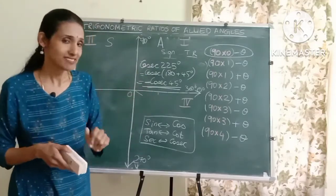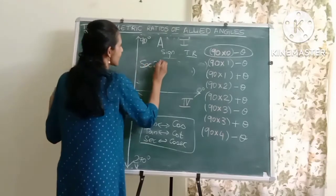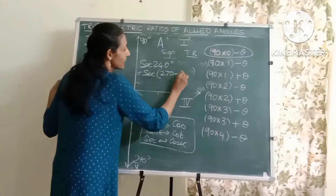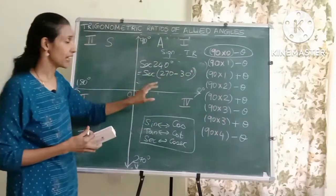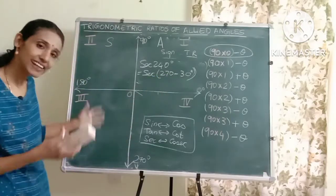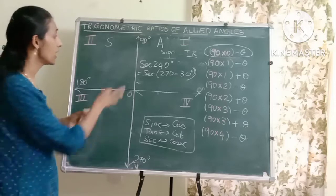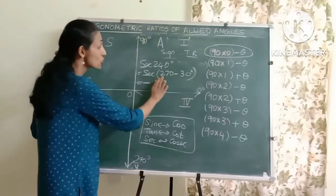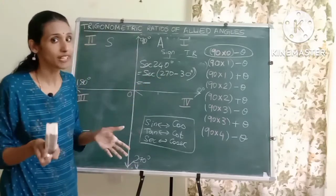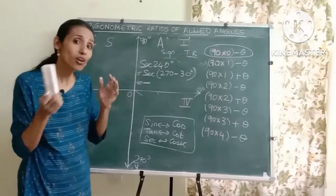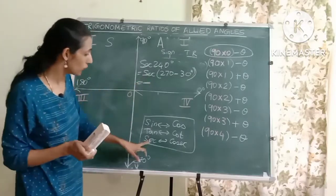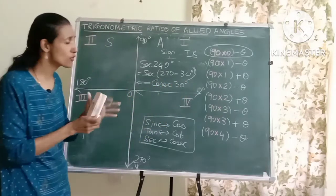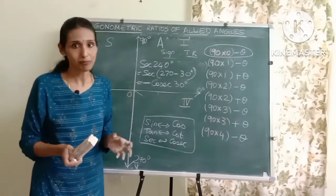For 270 minus theta, let's take sec of 240 degrees — I can write it as 270 minus 30 degrees. This lies in the third quadrant where tan and cot are positive, but I have sec, so it will be a negative value. Since 270 lies on the y-axis, the y-axis always changes the trigonometric ratio, so sec becomes cosec. This gives us minus cosec 30 degrees. If you remember the rules, this is extremely easy.